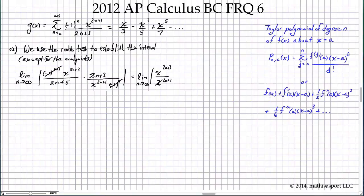I'm going to rewrite this: the limit as n goes towards infinity, absolute value of x to the 2n+3 over x to the 2n+1. What we're going to get as a result is just x squared. What about what's left, namely 2n+3 over 2n+5? Since we're taking the limit as n tends to infinity, the 3 and 5 here really become irrelevant. We're really just comparing 2n to 2n, so this is simply 1.